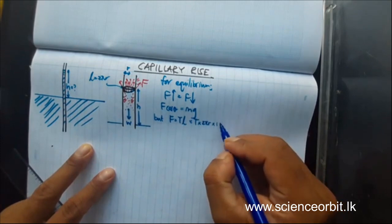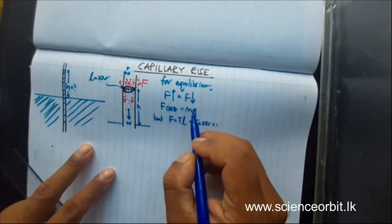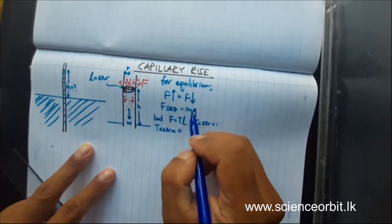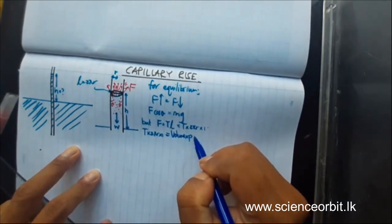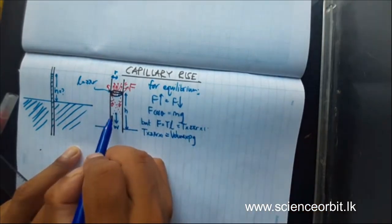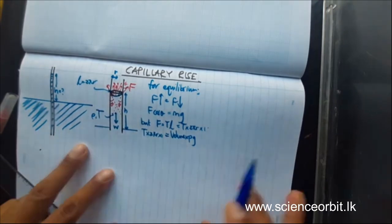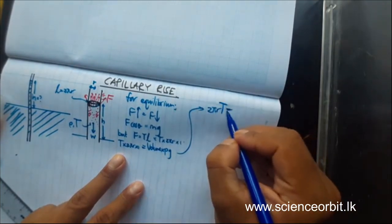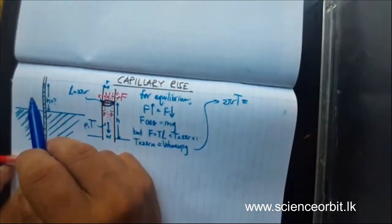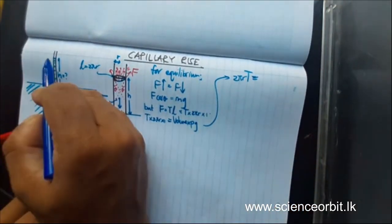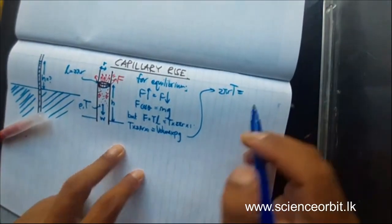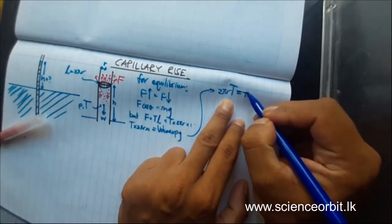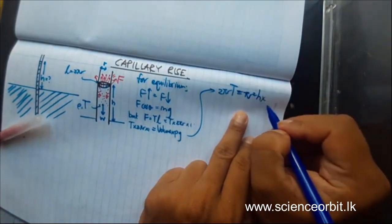For mg, instead of weight, we can say volume times density times g. Substituting: T × 2πR × 1 × cos theta equals volume × rho × g. The liquid that has risen is a cylindrical part, and the small meniscus volume at top we ignore since it is small compared to the height. Volume of a cylinder is πR²H. So: 2πR T cos theta = πR² H rho g. Then pi cancels, one R cancels, and we rearrange to find H.